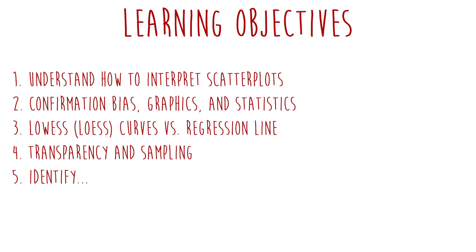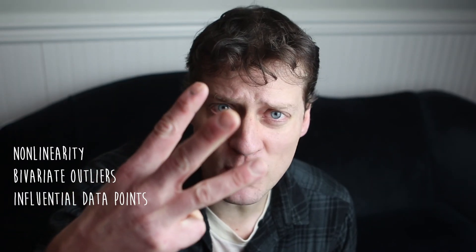That about wraps up this video. Let's review the objectives: understand how to interpret a scatter plot; understand confirmation bias and how it affects our ability to interpret graphics; understand what a LOESS curve is versus a regression line; know the benefit of transparency and sampling in graphical analysis and when we would use both; and finally, identify the following problems: non-linearity, bivariate outliers, influential data points, and high leverage data points. See you next time.